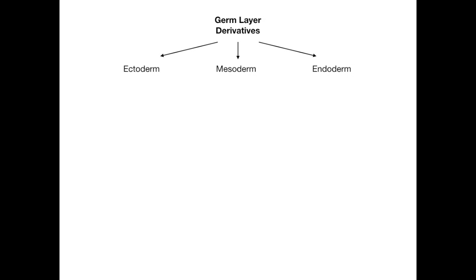The germ layer derivatives get divided up into the ectoderm, the mesoderm, and the endoderm. The ectoderm is further divided up into the surface ectoderm, the neural tube, and the neural crest. Each of these — surface ectoderm, neural tube, neural crest, mesoderm, and endoderm — have derivatives that come from them, giving rise to different structures in the human body. On tests, USMLE, and COMLEX, it's really important to know what comes from which of these five or six pieces.